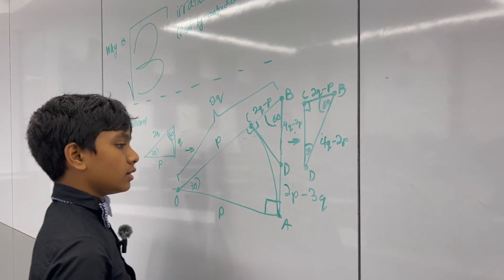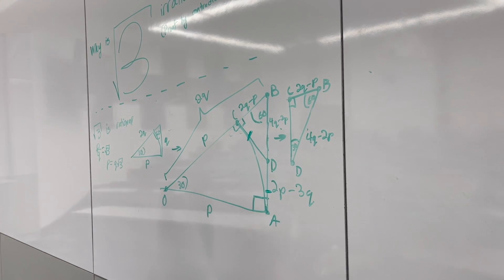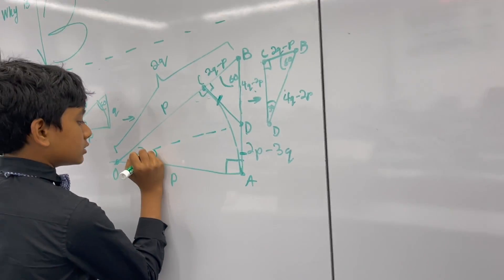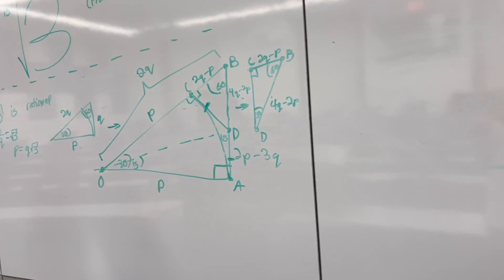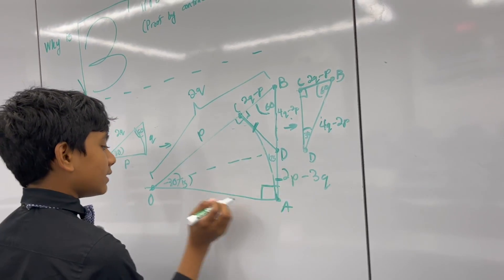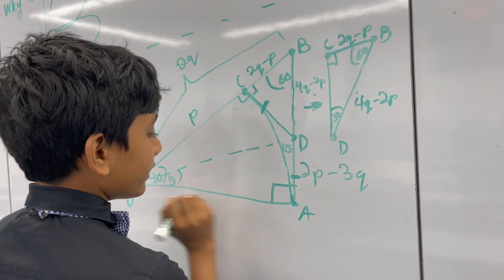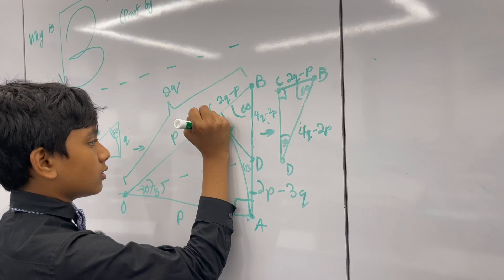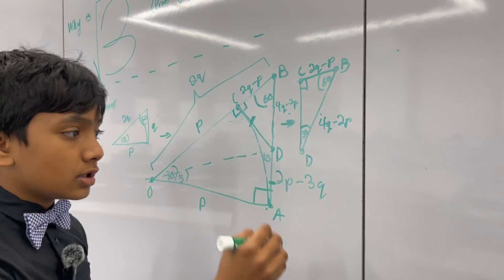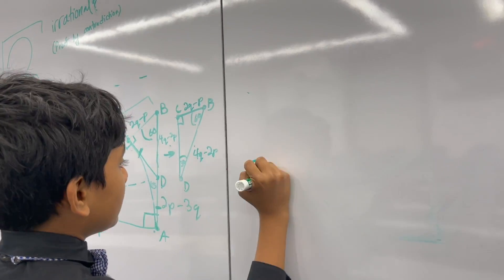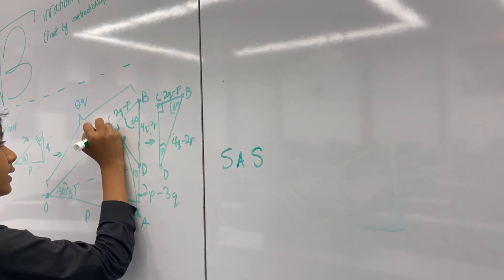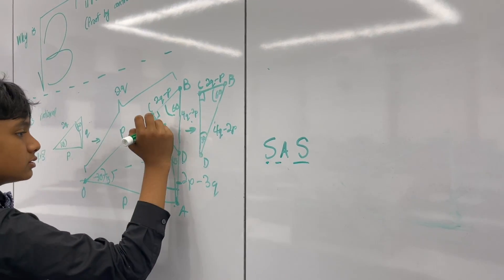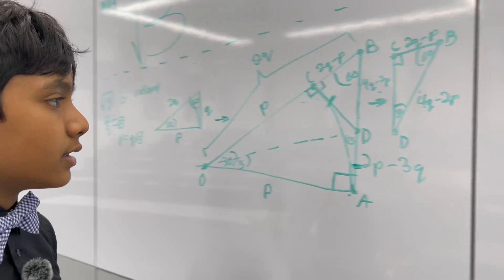You might realize that AD and DC are both the same length. Here's why: if we draw DO, that gives us two congruent triangles. These triangles both have a right angle, both have a long side equal to p, and share the same hypotenuse. So by side-angle-side, they must be congruent. That means DC, the short side of one, equals AD, the short side of the other. So DC equals 2p minus 3q.